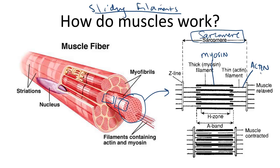When a nerve impulse reaches a muscle, calcium is released into the myofibrils. These calcium ions cause the myosin and actin filaments to attach to one another.